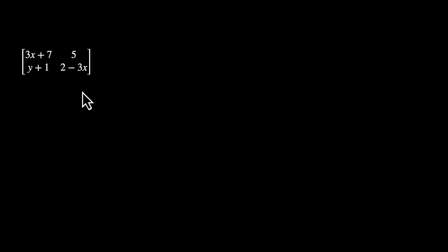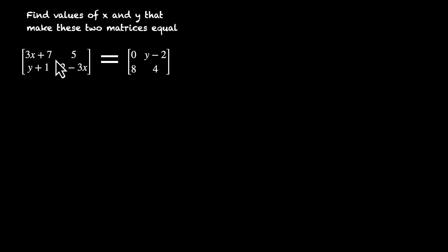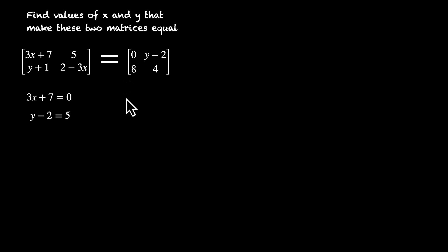Now let's solve some problems. We are given these two matrices and we are asked to find the values of x and y that make these two matrices equal. If these two are equal, their corresponding elements have to be equal, so we have 4 equations — one for each element. The first one is 3x plus 7 equals 0. The next one is y minus 2 equals 5. Then we have y plus 1 equals 8. And finally we have 2 minus 3x equals 4.